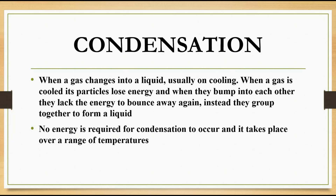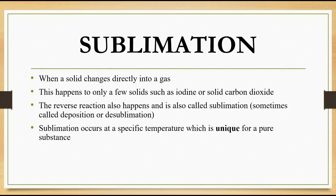Moving on to our next state change, which is sublimation. Sublimation is when a solid changes directly into a gas. This is a change between solids and gases. This happens to only a few solids, such as iodine or solid carbon dioxide. The reverse reaction also happens and it's also called sublimation, or alternatively deposition or desublimation. This process of sublimation occurs at a specific temperature which is unique for a pure substance.